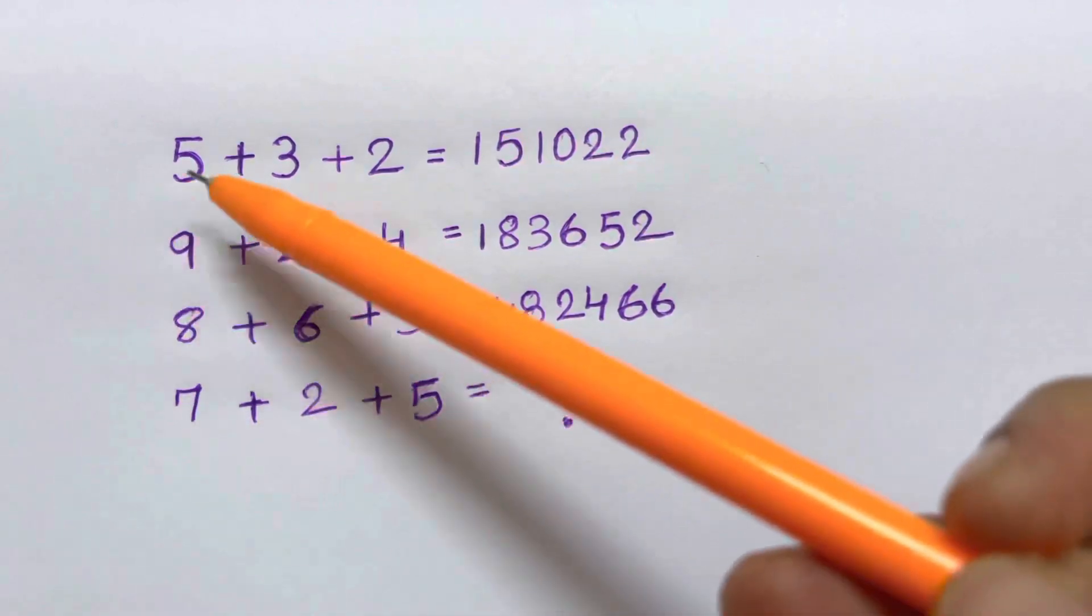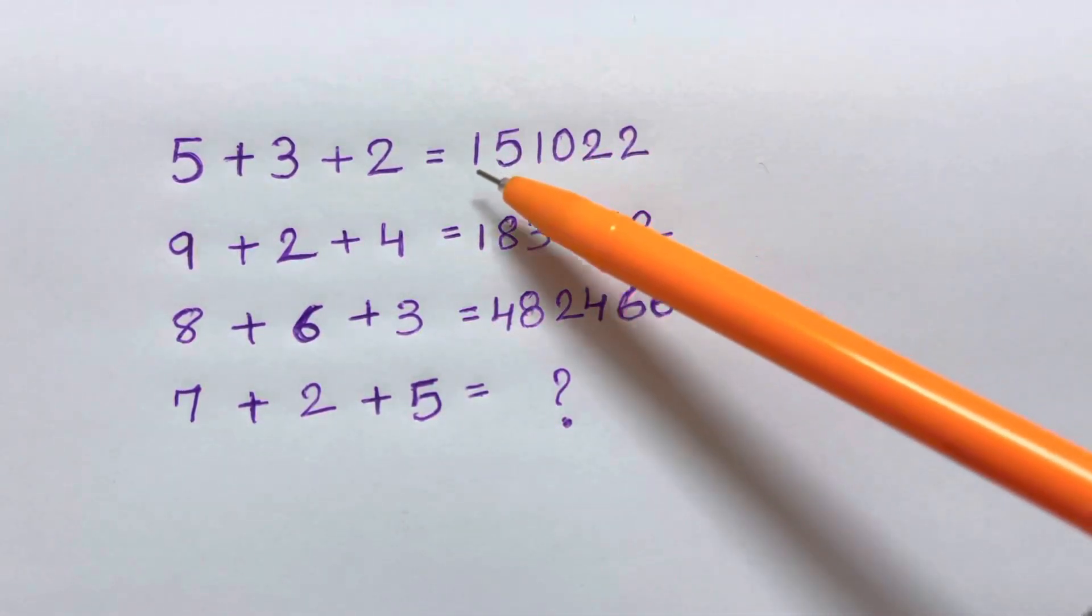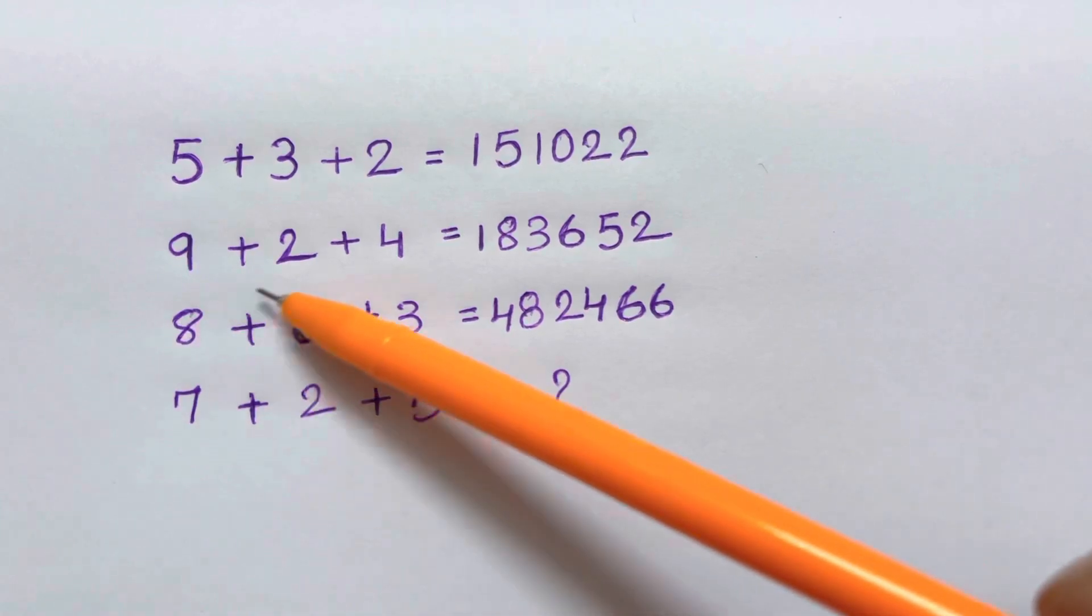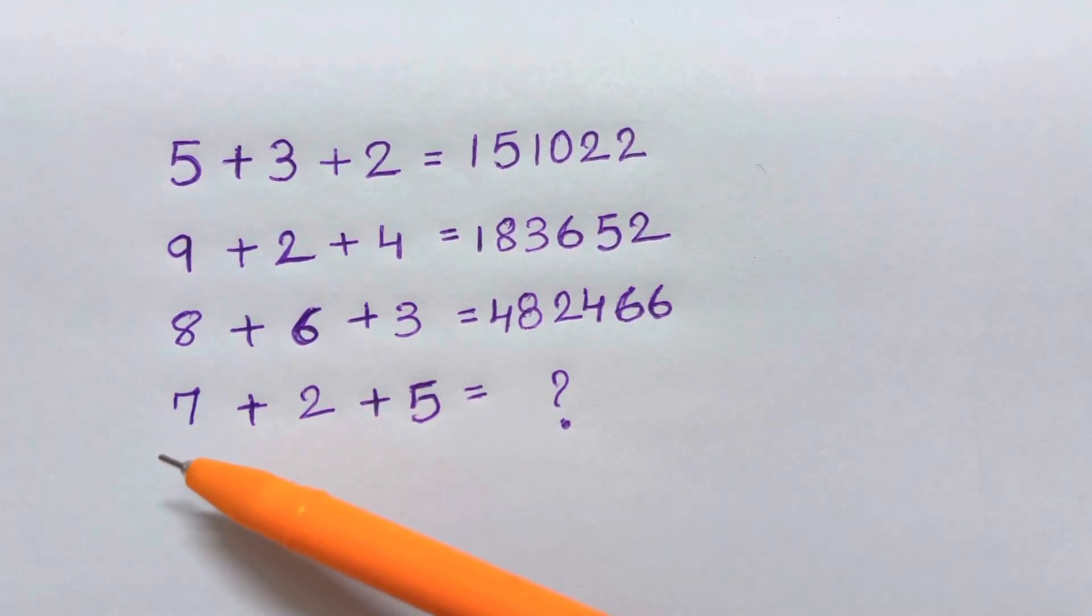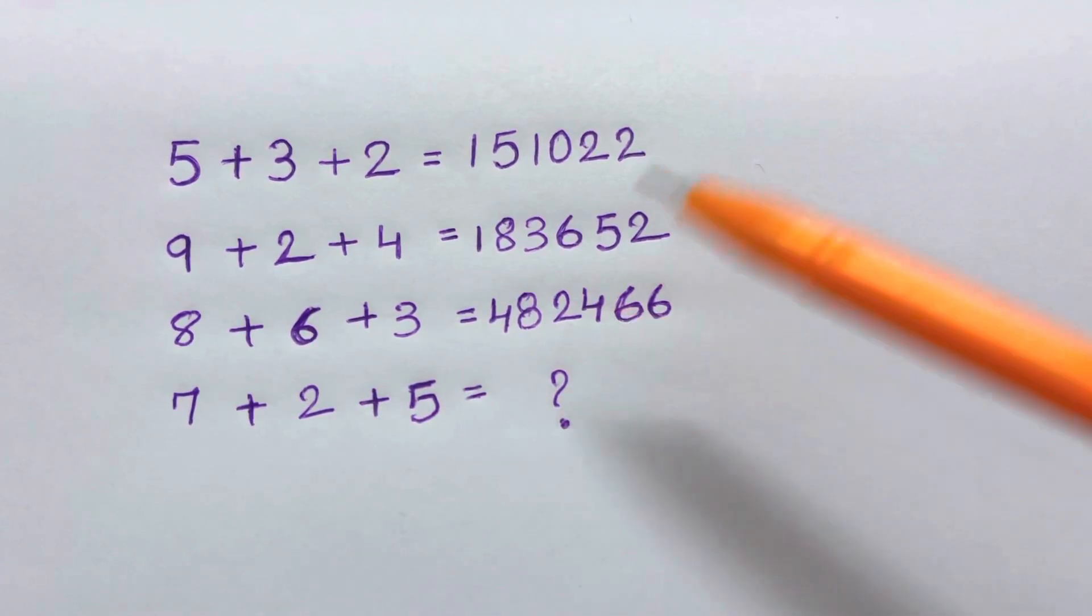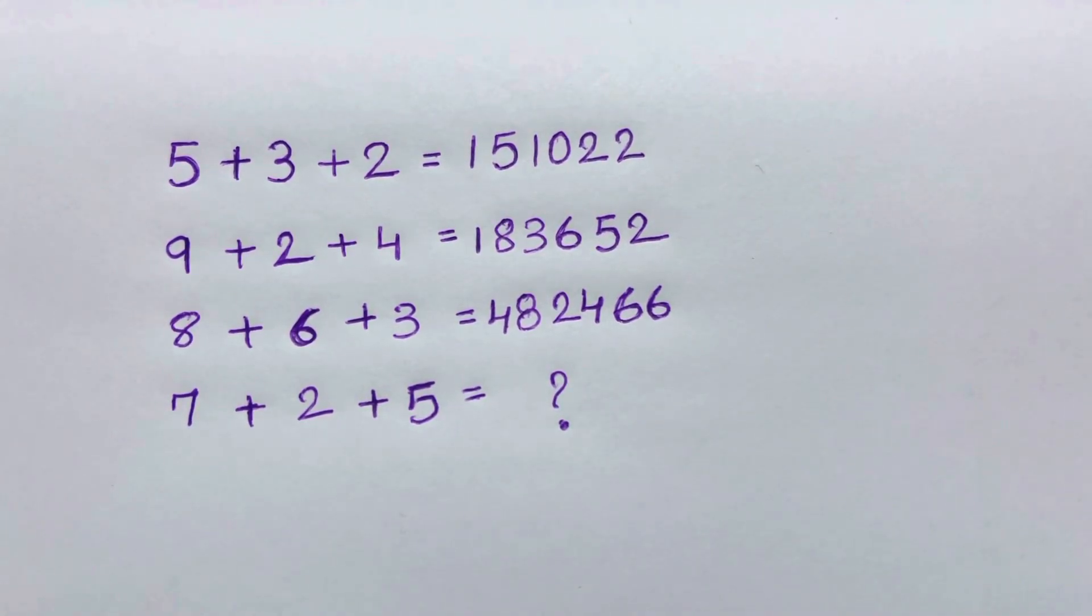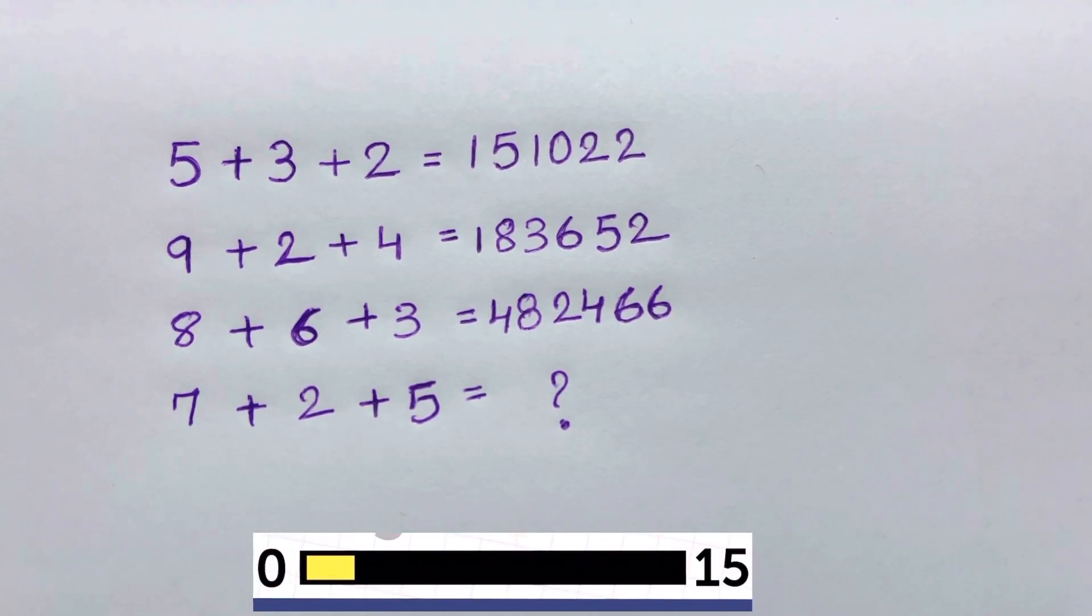It says 5+3+2 equals a six-digit number, 9+2+4 equals this six-digit number, 8+6+3 equals this, and so 7+2+5 equals what? You have just 15 seconds to solve this. Please do subscribe and share it with your friends.